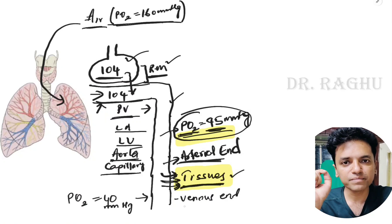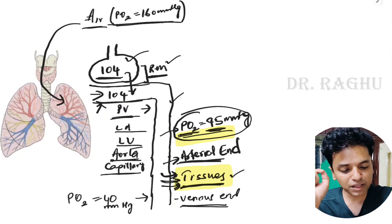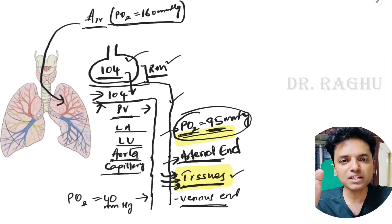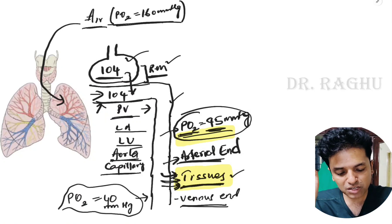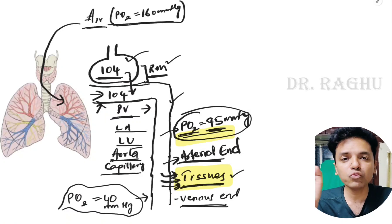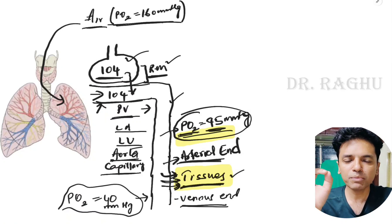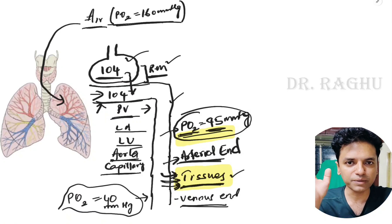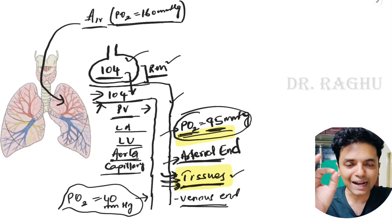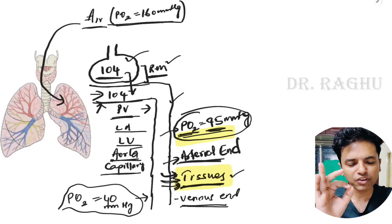Once blood reaches the arterial end of the capillaries, tissues extract the oxygen. Whatever oxygen remains enters the venous end of the capillaries. By the time blood reaches the venous end of the tissue capillaries, pO2 has fallen to 40 mmHg. So arterial pO2 is 95 mmHg whereas venous blood pO2 is 40 mmHg.